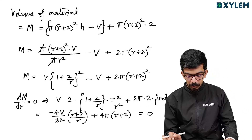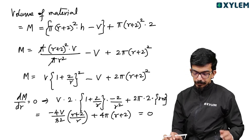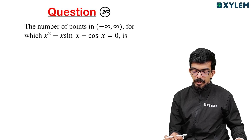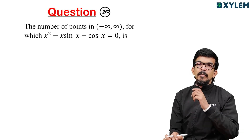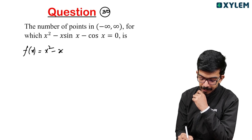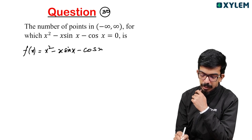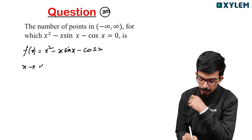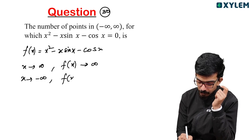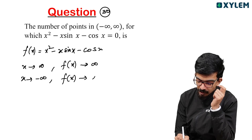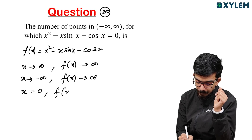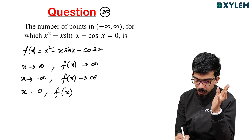Next question: Find the number of points in minus infinity to infinity for which x^2 minus x·sin(x) minus cos(x) equals 0. Define f(x) equals x^2 minus x·sin(x) minus cos(x). As x tends to plus or minus infinity, f(x) tends to infinity. At x equals 0, f(0) equals 0 minus 0 minus 1 equals minus 1.